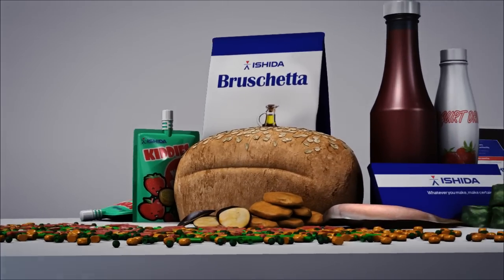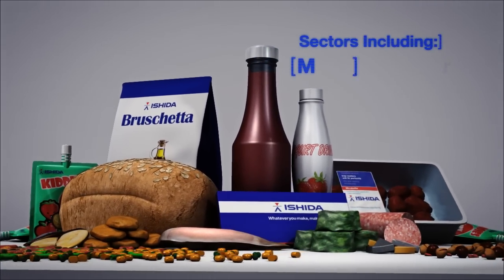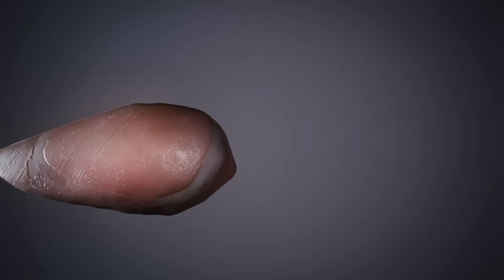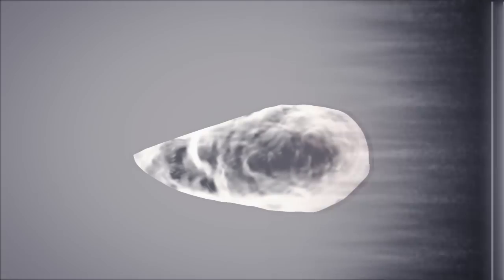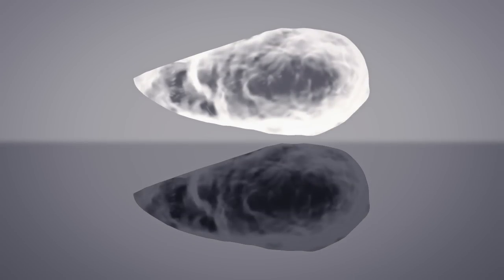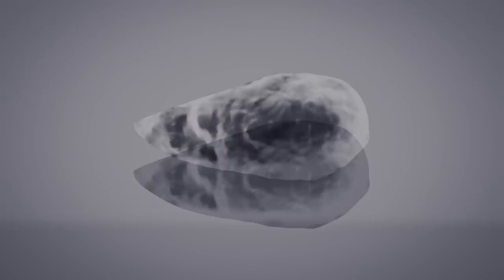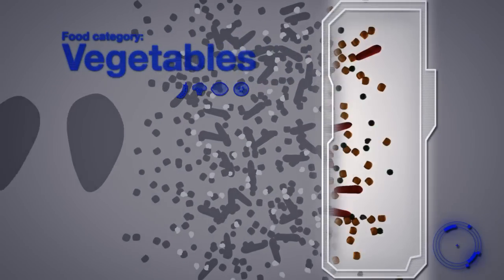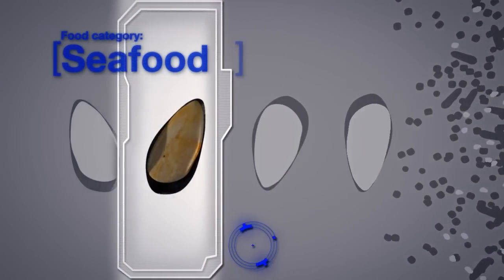We make sure that we understand every customer's product individually, so we can deliver exactly the right solution. For applications where the foreign body density is comparable to the product density, the Dual Energy System will deliver the best performance to determine where the product is contaminated. Other examples include stones in vegetables and shell in seafood.